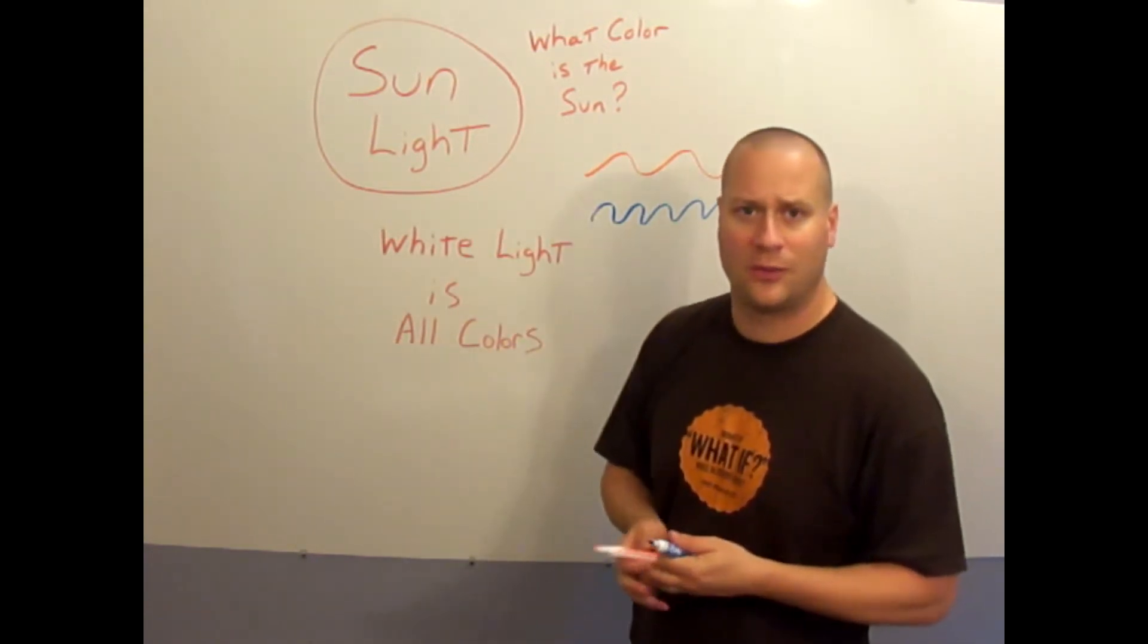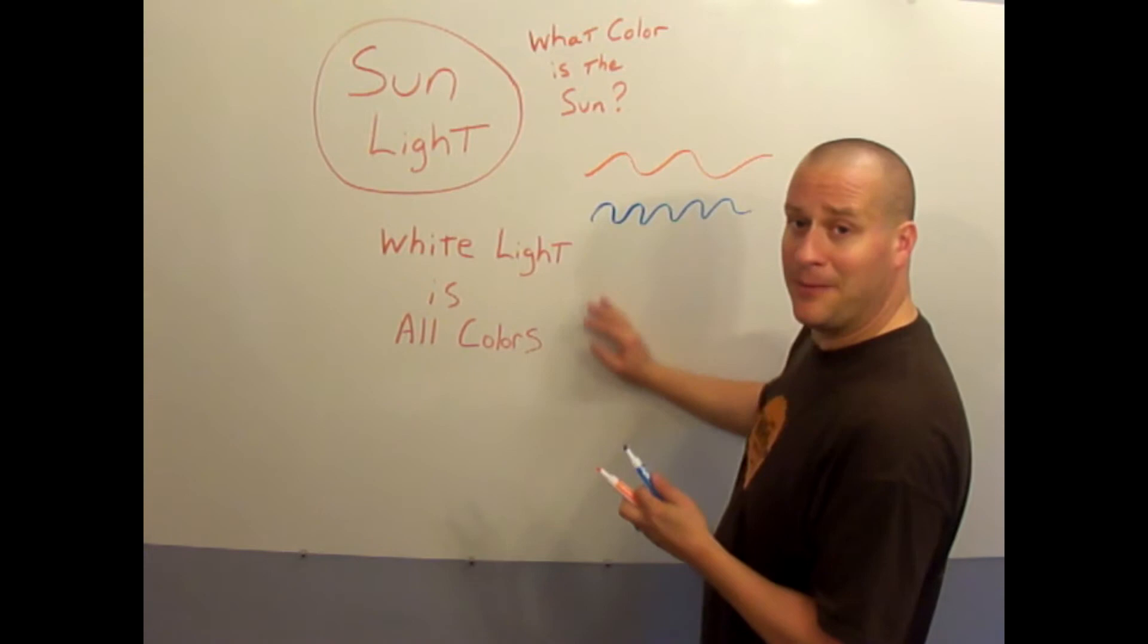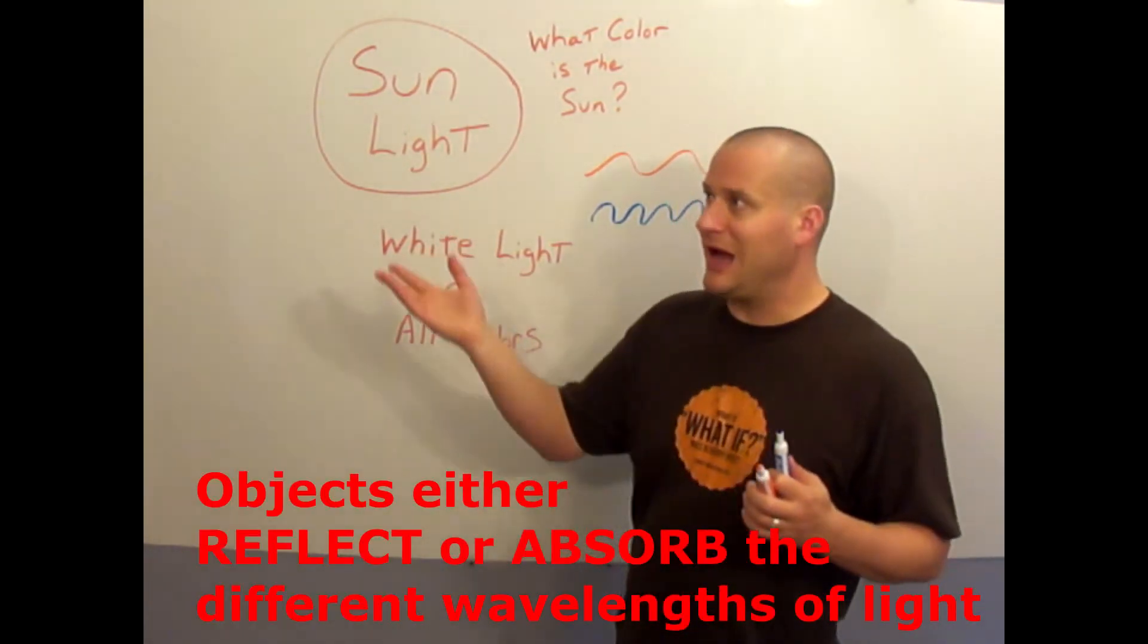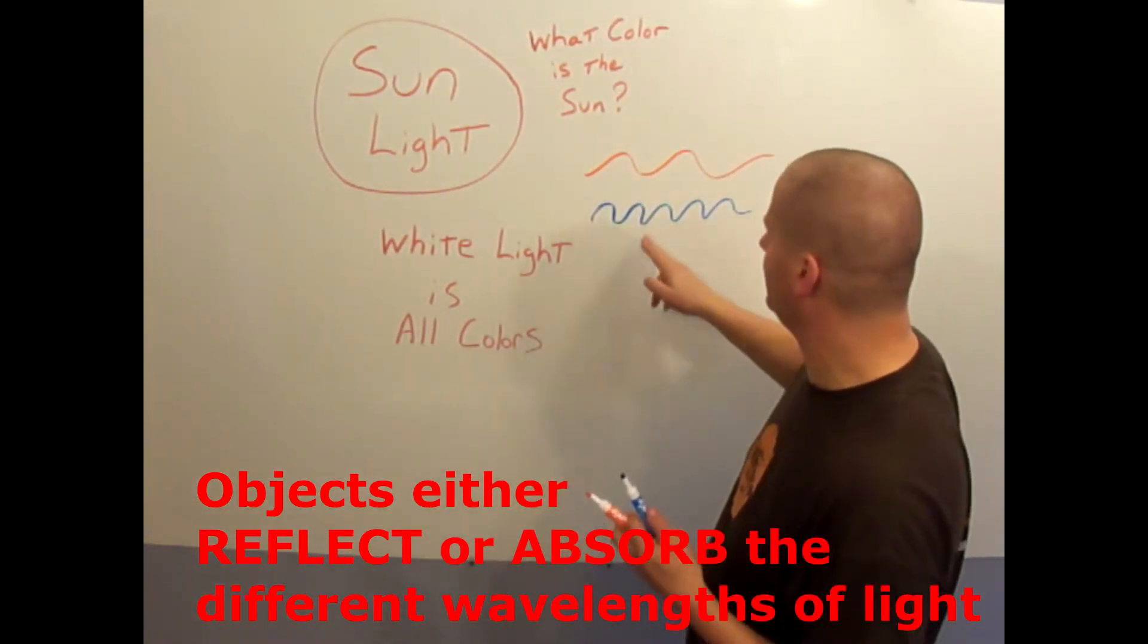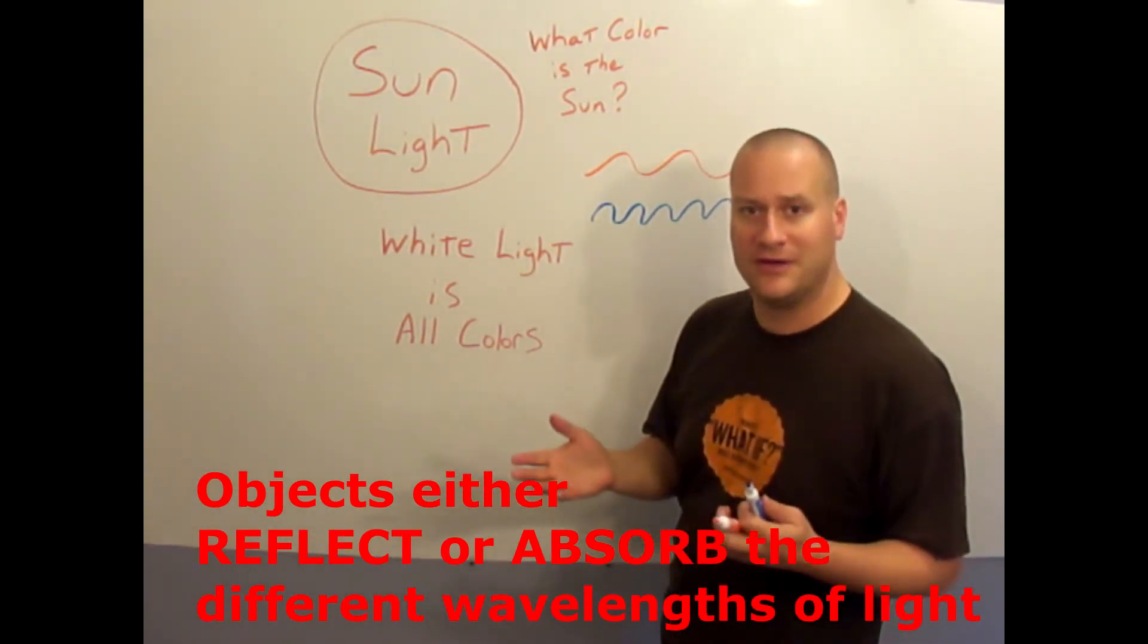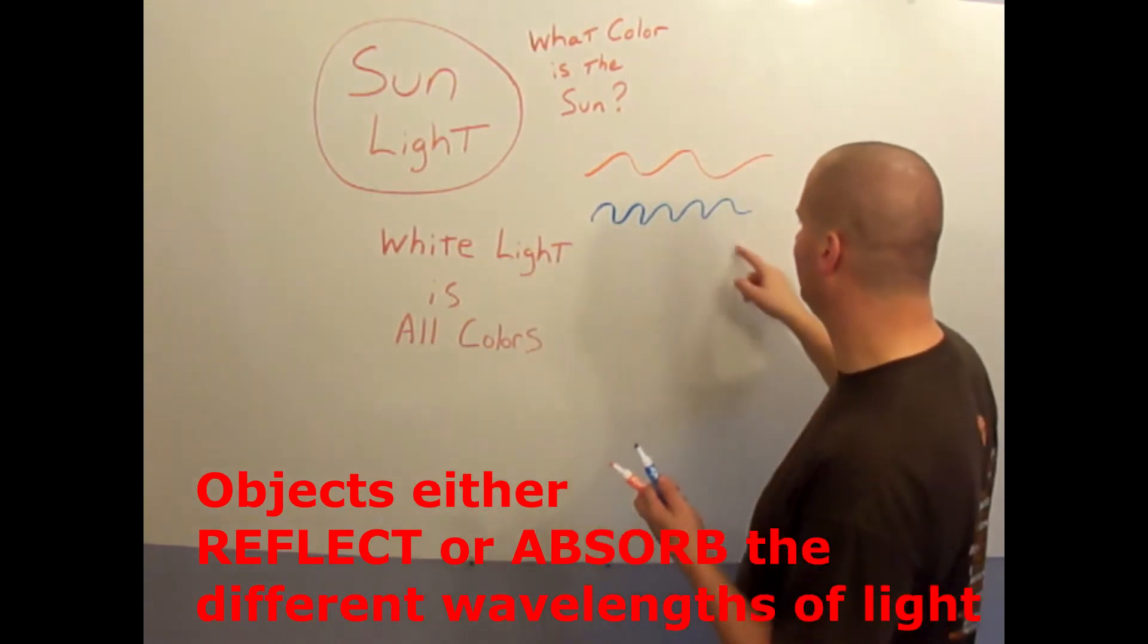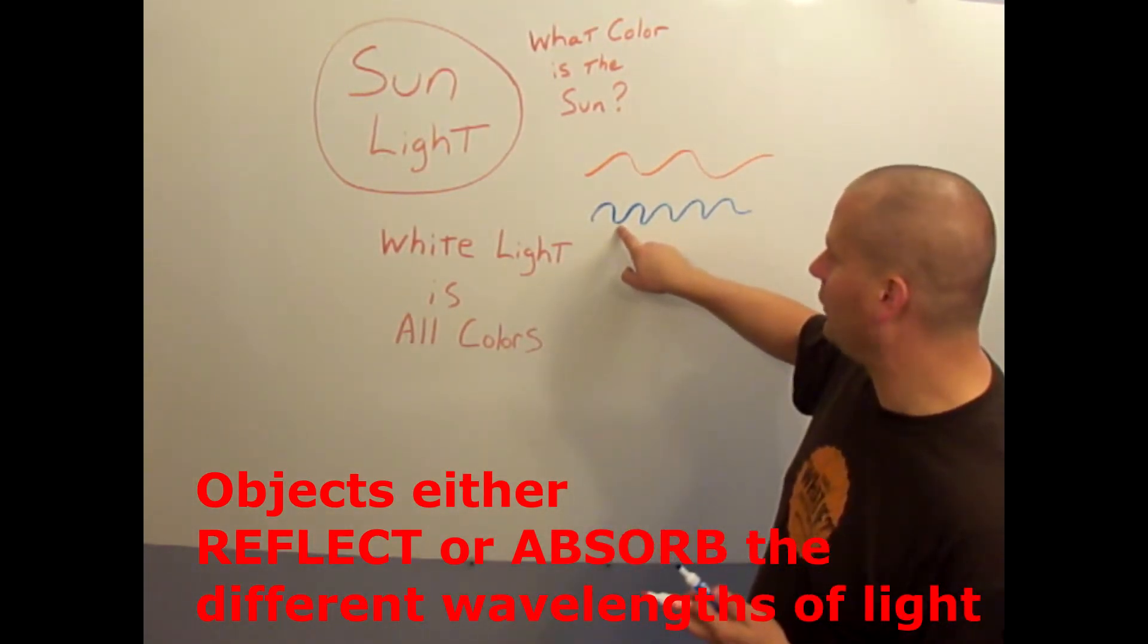Our eyes have the ability to discern and to tell the difference between long waves and short waves, and our brain registers as colors. In every object in the universe, whether it's a red rose or a blue sky or a blue wall or brown or orange or blue ink, all reflect and absorb different colors.